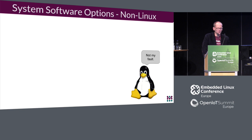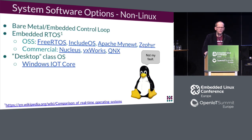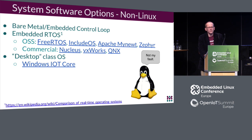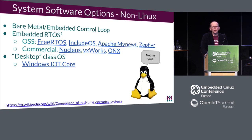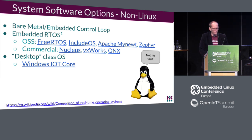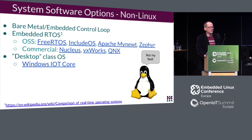If you aren't running Linux, options include a bare-metal embedded control loop — very low-level, writing everything yourself — or an embedded RTOS. Open-source RTOSs include Zephyr, FreeRTOS, and IncludeOS. Commercial offerings include Nucleus, VxWorks, and QNX, with varying cost models including royalties, upfront development licenses, or neither. Windows IoT Core is also an option and has people who really like it, particularly in some areas focused on IoT development.